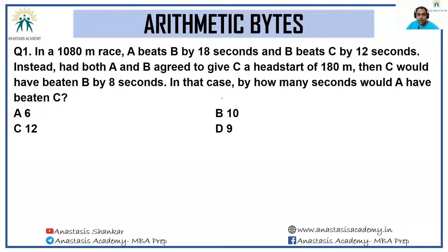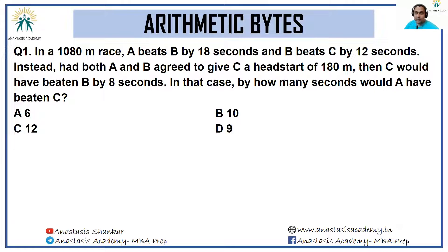Let's look at the solutions for arithmetic bites for today. In a 1080 meter race, A beats B by 18 seconds and B beats C by 12 seconds. Instead, had both A and B agreed to give C a head start of 180 meters, then C would have beaten B by 8 seconds. In that case, how many seconds would A have beaten C? Now, this question is a prime example of how unnecessary information is given to us to distract us from the main information.